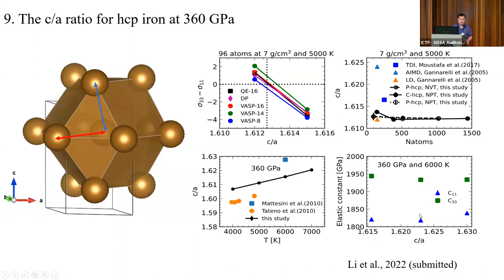We calculate the elastic constants c₁₁ and c₃₃ as functions of the c/a ratio. In the past, people assumed that if the c/a ratio is close to the ideal value of approximately 1.63, then c₁₁ and c₃₃ would be equal. But from our simulations we find they are not equal, suggesting that elastic constants are not only related to short-range correlations but also to long-range structural correlations.